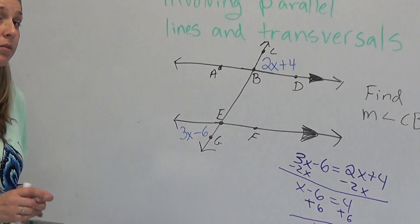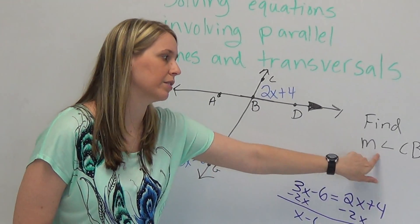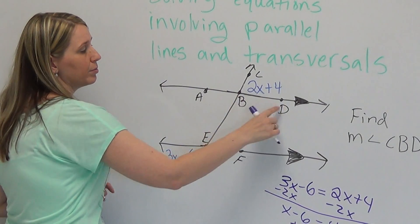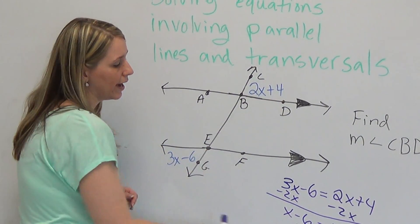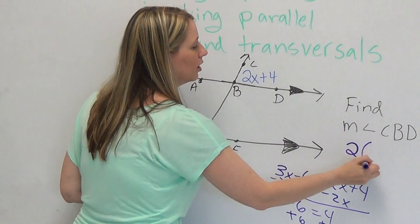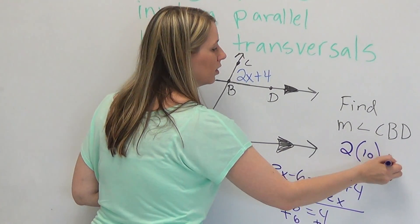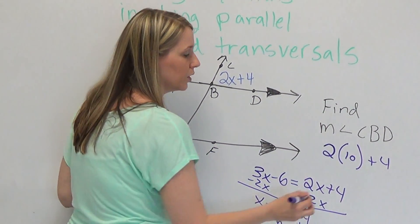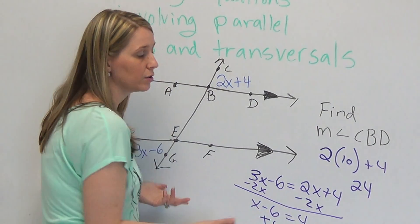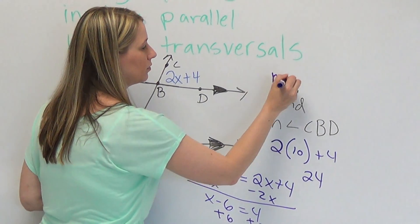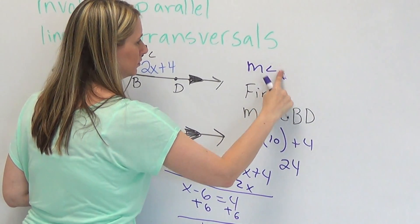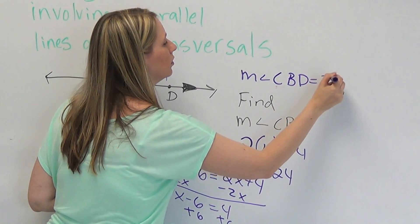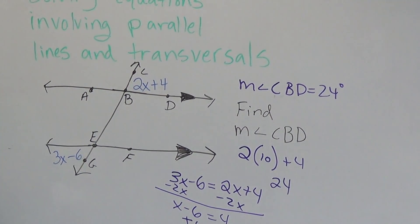Now, x is 10, but I'm not finished with the problem because the problem asked me to find the measure of angle CBD. So what I have to do is take my x and plug it back in. CBD is represented by 2x plus 4. I know my x is 10, so I simply plug it in. 2 times 10 plus 4. 2 times 10 is 20, 20 plus 4 is 24, so I get 24. But to represent it correctly, the measure of angle CBD is equal to 24 degrees, and that's how we represent it.